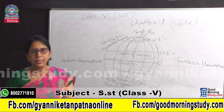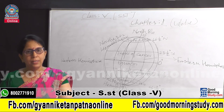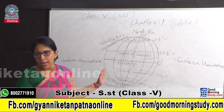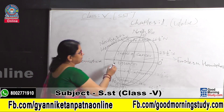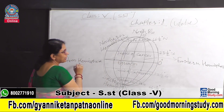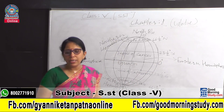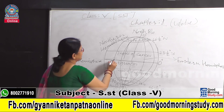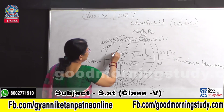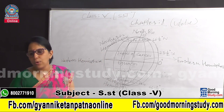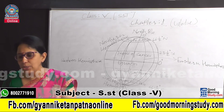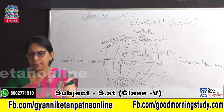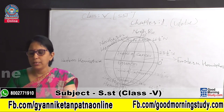The prime meridian is an imaginary line running from the North Pole to the South Pole, which divides the Earth into the Eastern Hemisphere and the Western Hemisphere. The latitudes and longitudes intersect each other at right angles to form a network of lines called the grid, which also helps in locating places.